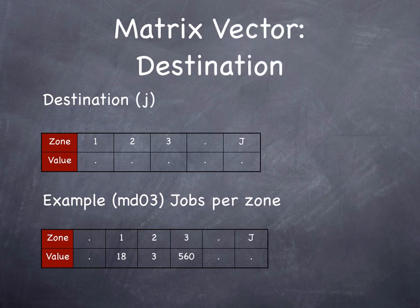Destination vectors are just a row of data, where again each cell is indexed by the Transportation Analysis Zone. An example might be the number of jobs in a zone, which is also important to estimate the total number of trips a zone generates. We organize this data as rows instead of columns so we can interact it with the origin vectors to create full matrices.